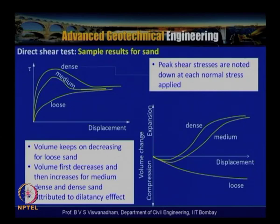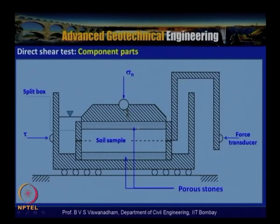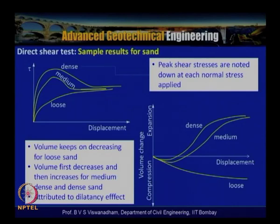In the direct shear test, vertical strain is measured with a dial gauge and lateral movement with a dial gauge, potentiometer, or LVDT. This gives shear displacement versus vertical strain curves, where the vertical strain can represent either expansion or compression.